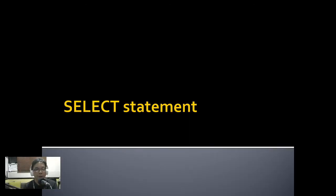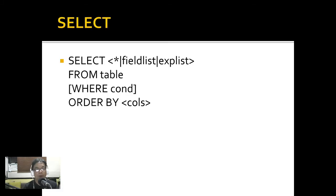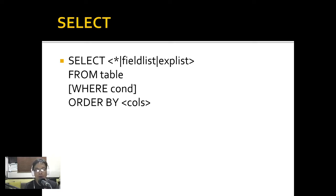Today we'll have a crash course on the SELECT statement. The syntax is: SELECT followed by either an asterisk — meaning all fields — or a field list, or an expression list. Then FROM, then the name of the table, and optionally a WHERE condition and ORDER BY clause. The WHERE condition filters records, and ORDER BY arranges the records displayed by the SELECT statement, sometimes called the result set.